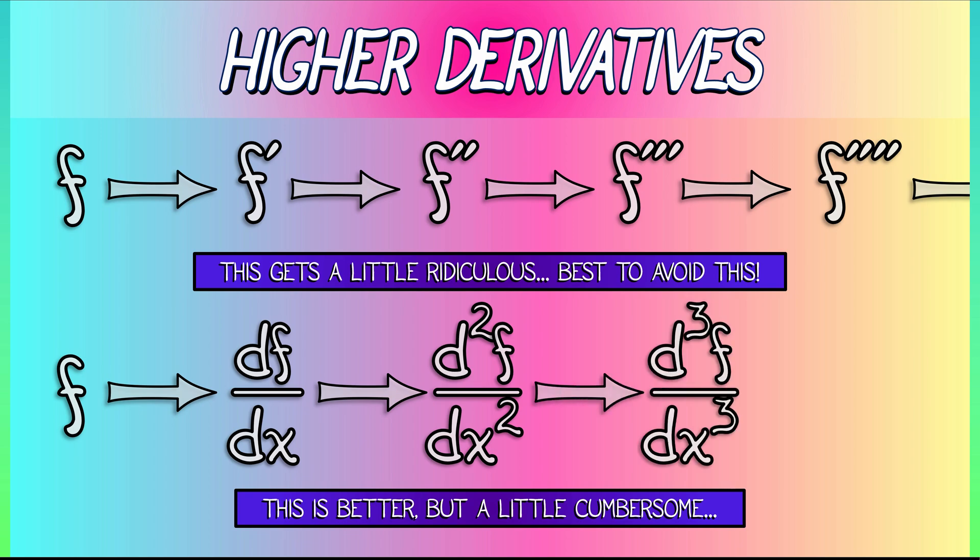The third derivative, d cubed f dx cubed. The fourth derivative, the fifth derivative, these increase those exponents. Now, beginning calculus students often wonder why do the exponents work the way they do? Why is it that in the numerator, it's in front of the d? In the denominator, it's in front of the x? Why is that?